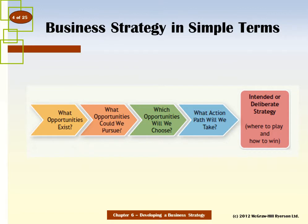In simple terms, business strategy involves: having a solid understanding of what market opportunities exist for our firm, comparing to see which ones we could pursue given our resources, competencies, and strengths, making a decision on which ones we will choose to focus on, and determining what action path we will take — how we will execute the plan. The answer to those questions forms our deliberate strategy: where we will play and how we will win.